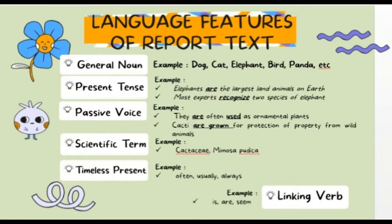In this part, we are talking about language features of report text. There are six parts. The first is general noun — example: dog, cat, elephant, panda. Next, present tense — example: 'Elephants are the large land animals on earth.' This is a nominal sentence because it uses 'to be': am, is, or are.